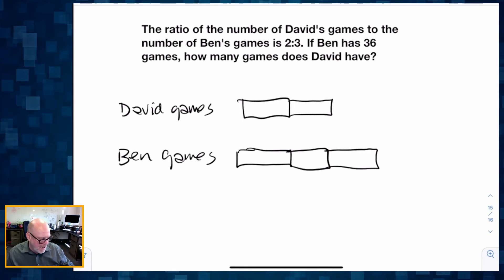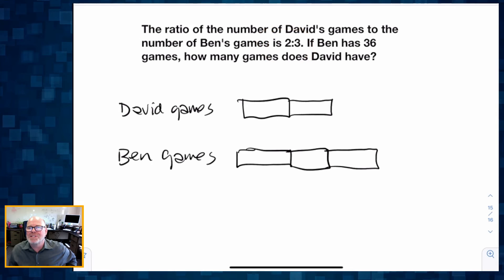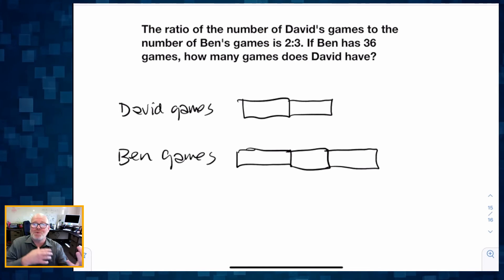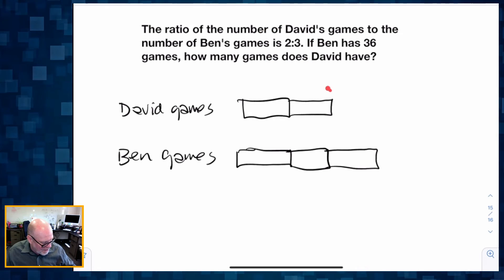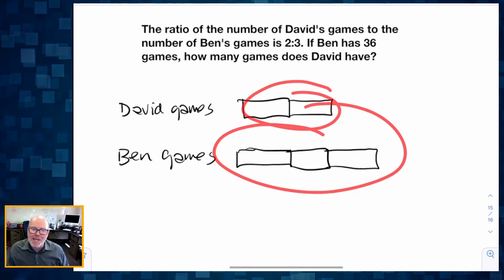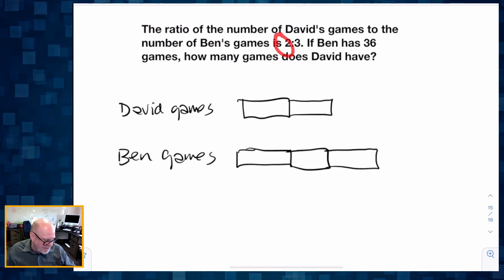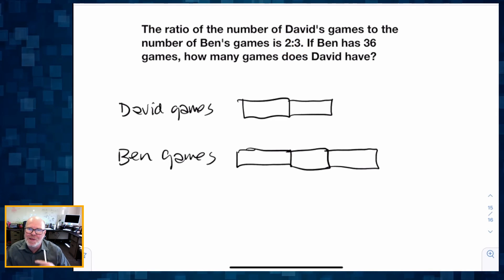Obviously, when you're using a tape diagram, it's a good time to use it, or at least consider using it, if your ratio is relatively small. The ratio 2 to 3 is pretty easy to represent using tape diagrams. It would be kind of lousy if this was like 27 and 36. So be thinking about when it might be a good time to use your tape diagrams.